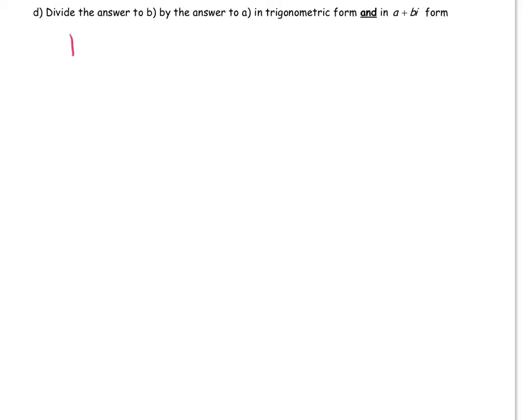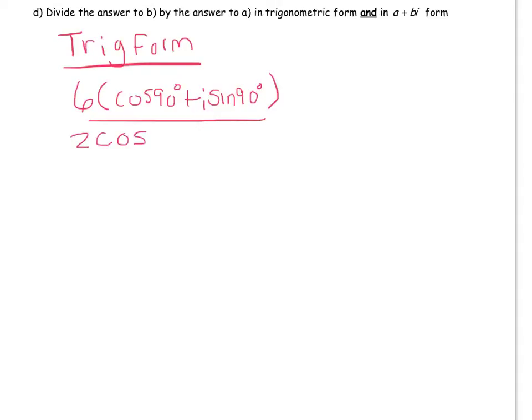So in trig form, first of all let's recall what our answer to B was. Our answer to B was in trig form 6 cosine 90 degrees plus I sine 90 degrees, and we're dividing that by our answer to A which was 2 cosine 330 degrees plus I sine 330 degrees.